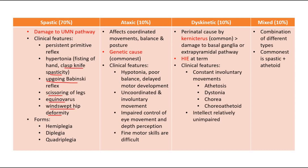The second type is ataxic cerebral palsy, which affects coordination, balance, and posture. The most common cause is genetic, and it can also be due to cerebellar dysfunction. Clinical features include hypotonia — compared to the spastic type which has hypertonia — impaired balance, uncoordinated and involuntary movements, impaired control of eye movement and depth perception, and difficulty with fine motor skills requiring eye-hand coordination, such as writing.